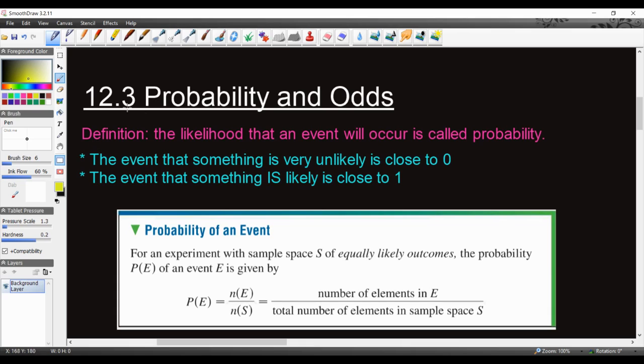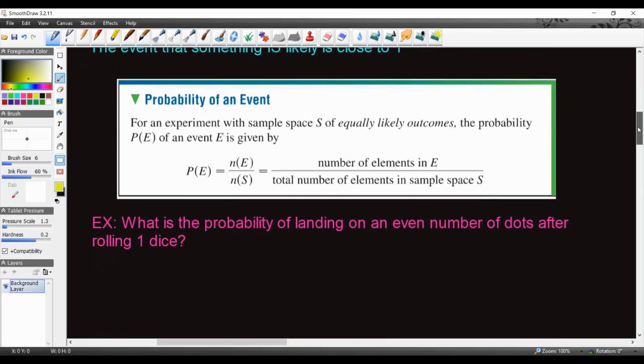So before we do that, let's go ahead and define this officially. We have that the likelihood that an event will occur is called probability. So this is our definition of probability. The event that something is very unlikely is close to zero. For instance, the probability that certain football professional teams will get the Super Bowl is close to zero based on past events. And that would actually be something called empirical probability. The event that something is likely is close to one. So it's kind of like 100%. The closer to one, the better your chances are. Closer to zero, the worse your chances are.